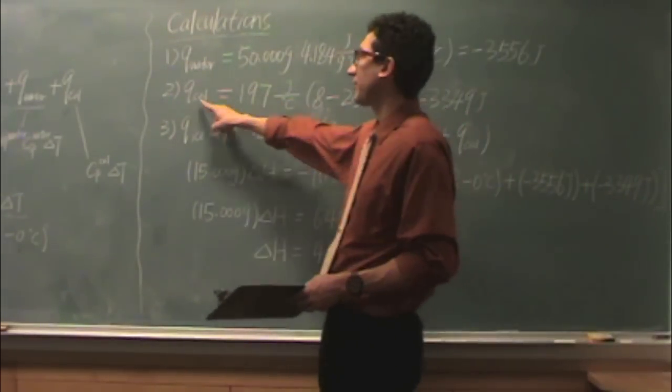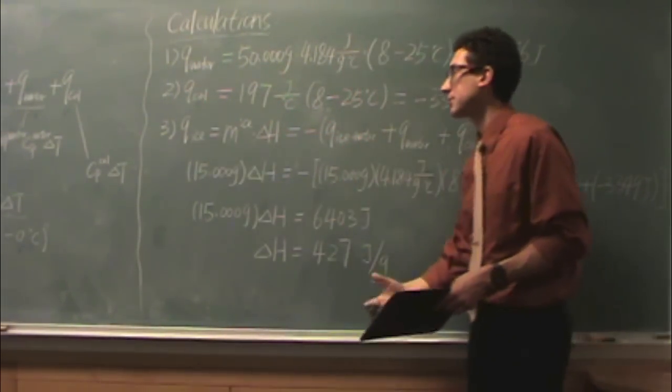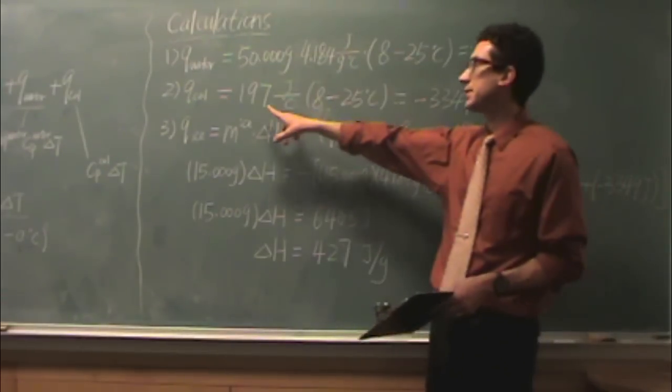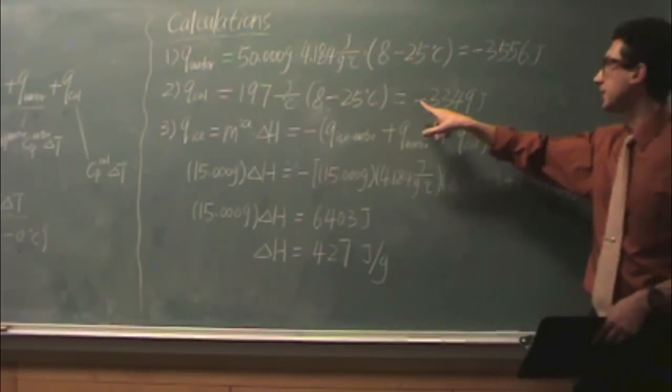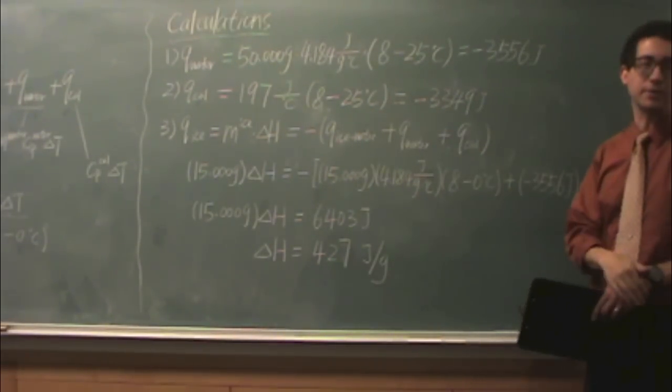Then, you need to do the same sort of thing, but for the calorimeter. We need to know that one as well. Here's the average from part one. Eight minus 25, and you get negative 3349 joules.